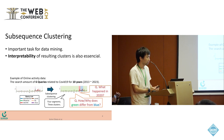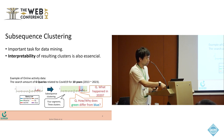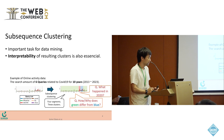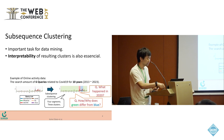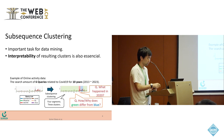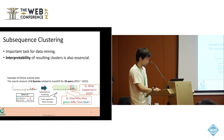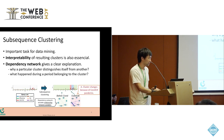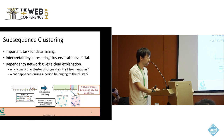But there are problems for understanding this result. We don't know how the green cluster differs from the blue, and what happened in 2020 when the cluster suddenly changed. We assume that the dependency network gives a clear explanation of those questions.